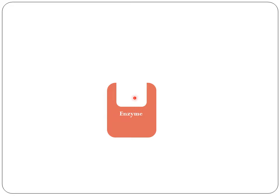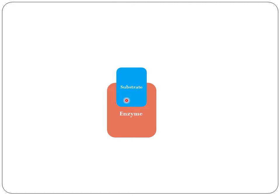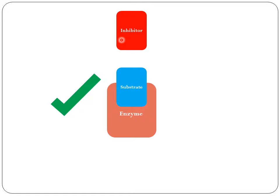This is the enzyme, and as you can see, the enzyme has its own active site. To this active site the substrate will bind, and when the substrate is bound here the enzyme will work on the substrate, releasing the products. This is the normal mechanism of how all enzymes work.